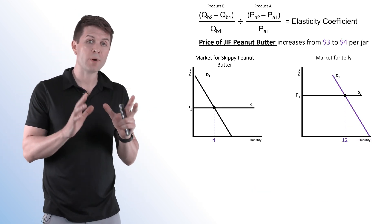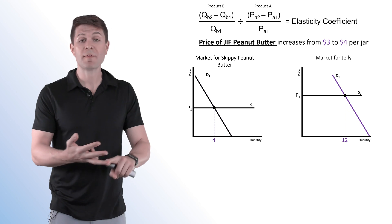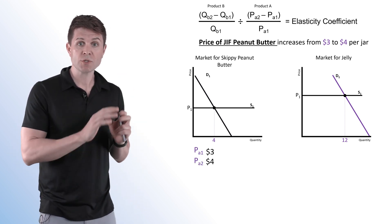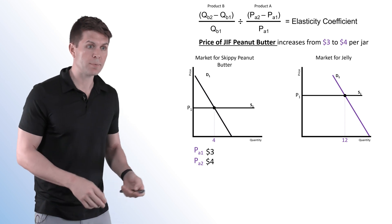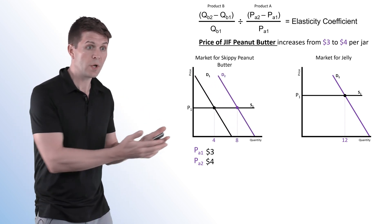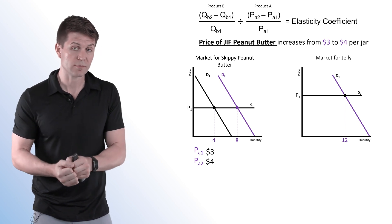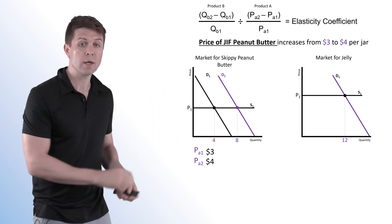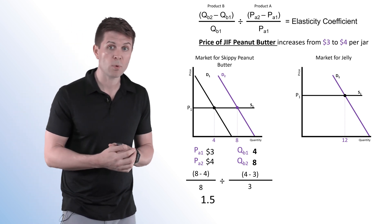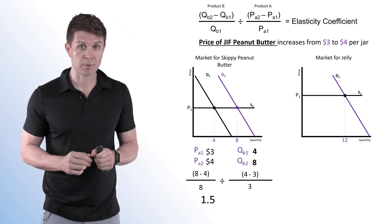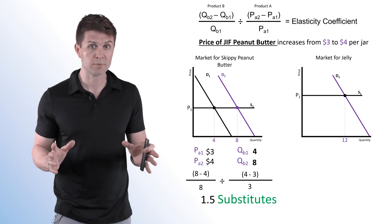In this example, we're looking at how a price increase from $3 to $4 in Jif brand peanut butter impacts the market for Skippy peanut butter and the market for jelly. The price of Jif goes from $3 to $4. Because these two are substitutes, we see the demand curve shift right for Skippy, and instead of buying 4, we are now buying 8 units. When we plug that into our formula, we get a coefficient of 1.5 — a positive number. Price of one good goes up, quantity demanded of the other goes up, so they are substitutes.